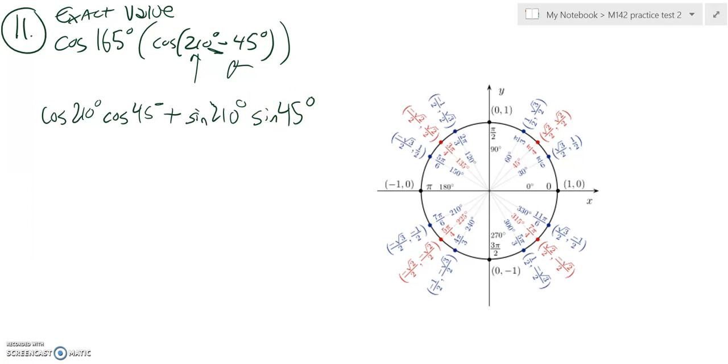We're dealing with 210 degrees and 45 degrees. Cosine of 210 is negative root 3 over 2. Cosine of 45 is root 2 over 2, plus